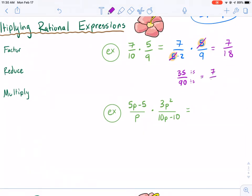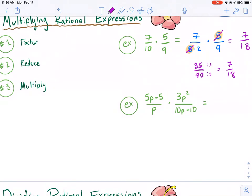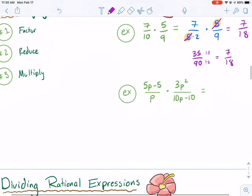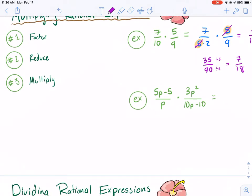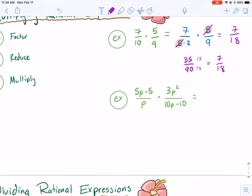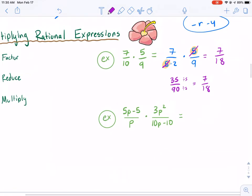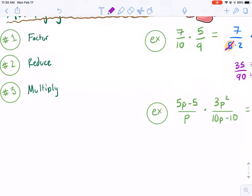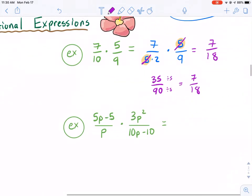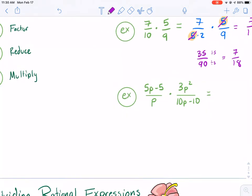7 over 18. You get the same thing, but it's just a little bit quicker process. If you can reduce after factoring, which we kind of did, there was nothing really to reduce, then you just multiply straight across and you're done. So I kind of zoomed through the first three steps, but that is the general process.